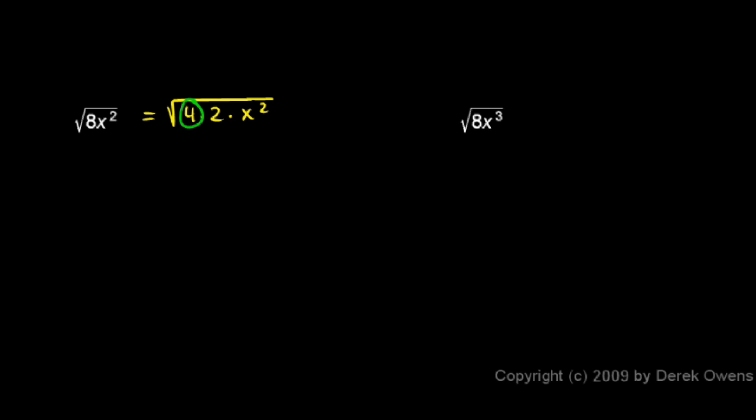So this 4 will come out front and become a 2, and the x squared pops out front also and becomes an x. So I'm left with 2 times x. Again, this 2 is simply this square root of 4 right there.